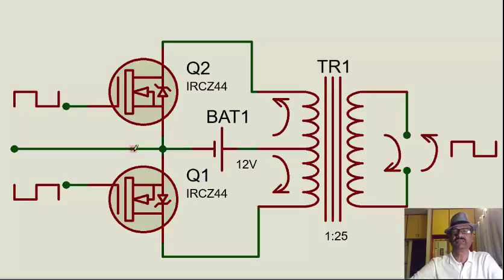Let's see how it works. This is the positive half cycle of the trigger and this is the negative half cycle. Mind you, this time is very small. For 50 Hz,